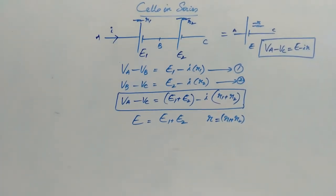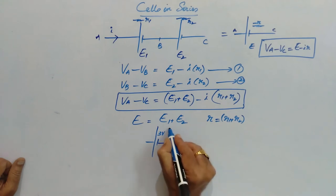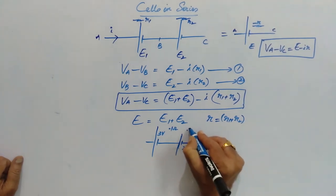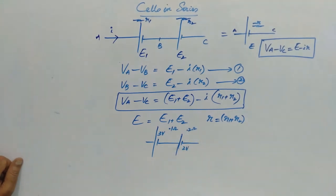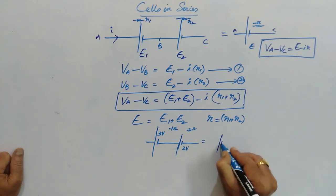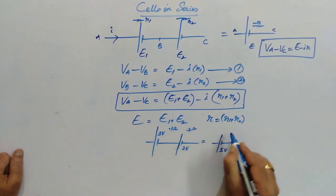That is, suppose if this EMF is 3 volts and 0.1 ohm is the internal resistance, and another cell 2 volts and 0.2 ohm internal resistance, I can write it as 5 volts because E is equal to E1 plus E2, and R is equal to R1 plus R2. So it is 0.3 ohm internal resistance.